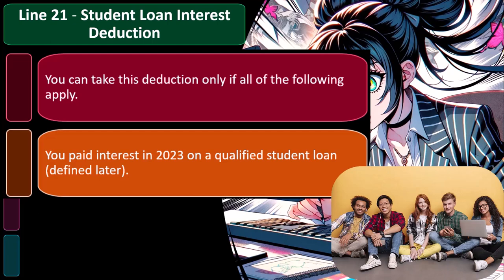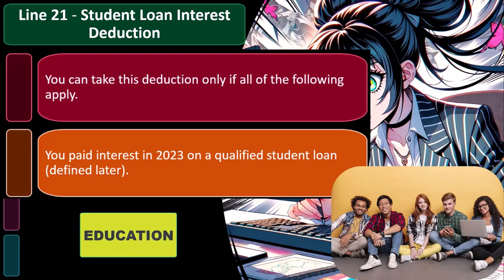What is the government trying to do? It incentivizes education. What actually happens? They end up subsidizing education, which increases the price of education.